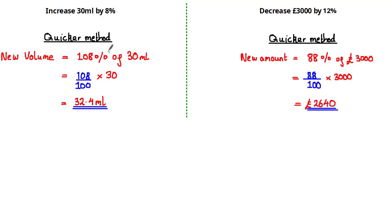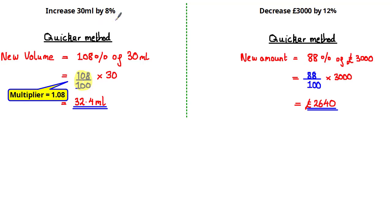The decimal value of this percentage is what we call the multiplier. Since 108% is the same as 108 out of 100, the equivalent decimal value is 1.08, which is the multiplier. So to increase 30 millilitres by 8%, all we have to do is multiply 30 by the multiplier 1.08, giving us a new volume of 32.4 millilitres.